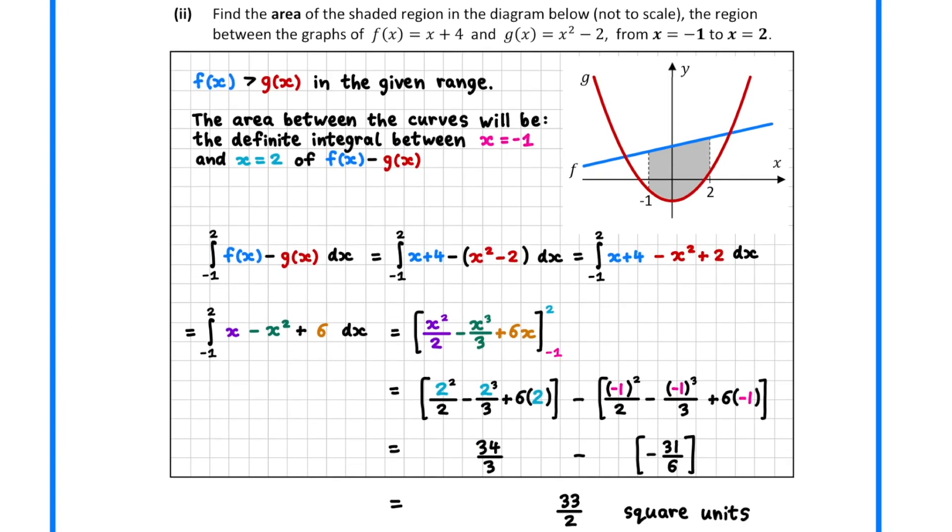In part 2, we need to find the area of the shaded region in a diagram. In the given interval, f is always greater than g, so we can obtain the area by integrating f minus g between the given bounds of minus 1 and 2.